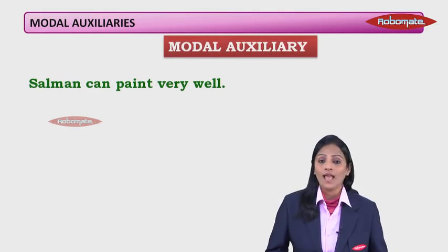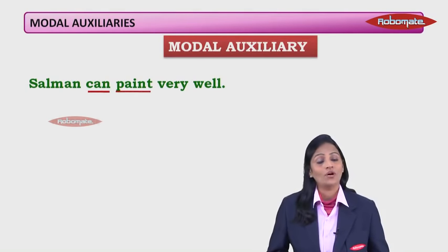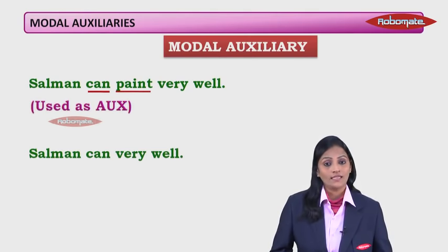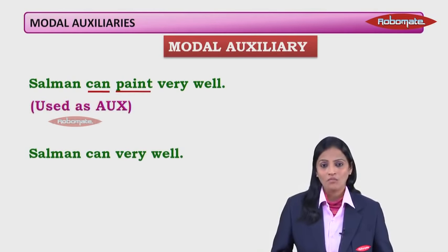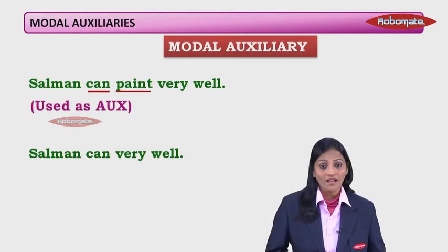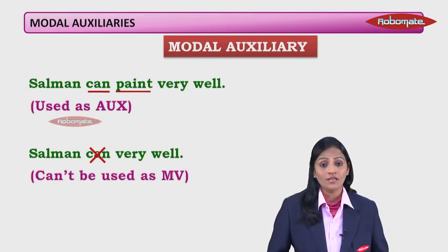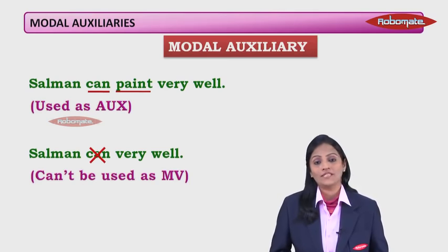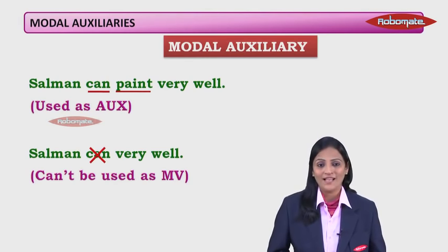Now let's look at modal auxiliaries. In 'Salman can paint very well', 'can' is the auxiliary verb. But if I say 'Salman can very well', that sentence makes no sense. So 'can' cannot be used as the main verb. A modal auxiliary can only come with another verb. It can never stand alone and can never be used as the main verb — it can only be used as a helping verb.